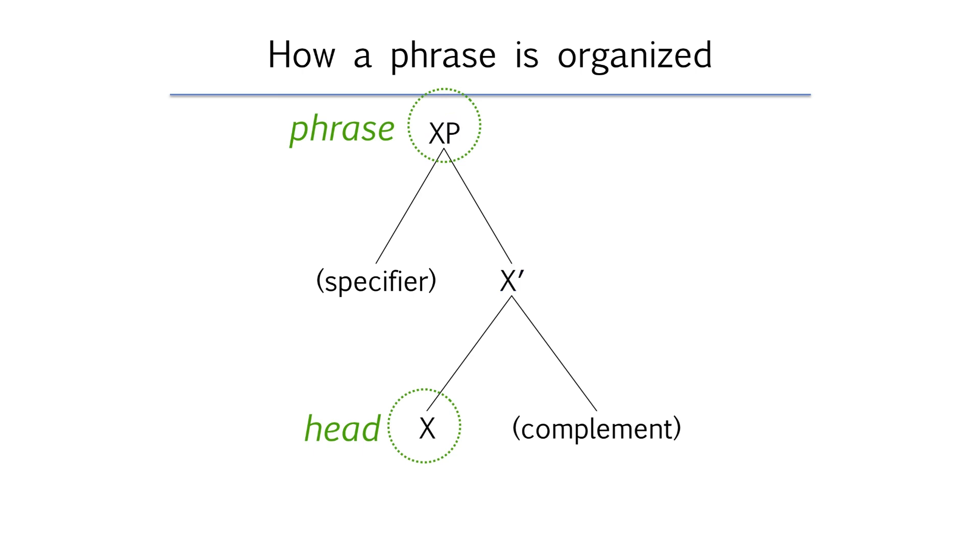So the bottom most level of the structure is called the head level and the top level is called the phrase level. What about the middle level of the structure? Syntacticians love to give funny names to parts of the mental grammar and this middle level of a phrase structure is called the bar level. That's where the theory gets its name X-bar theory.